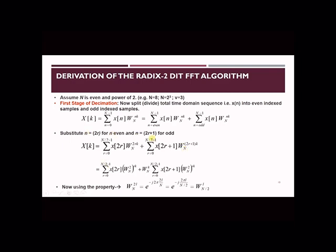This second part of twiddle factor is not containing any r index, therefore we are taking it outside the summation as a constant value. In the first part of the summation, we have x of 2r into w raised to 2 and in the second part we have x of 2r plus 1 into w raised to 2, where l is r times k.